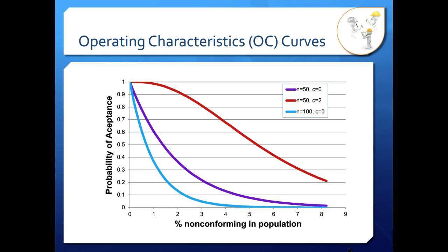Here are some sample OC curves, so you can see we have three different curves here. They have different N and C values if we look at this legend right here. N is your sample size, so here the purple and the red curve have a sample size of 50. The blue curve has a sample size of 100.